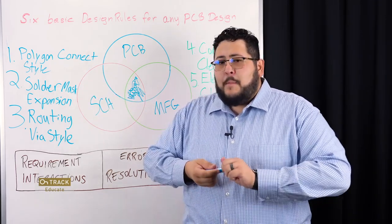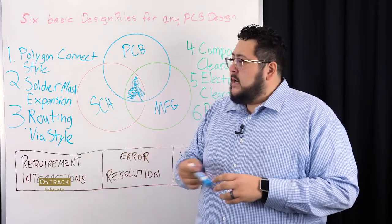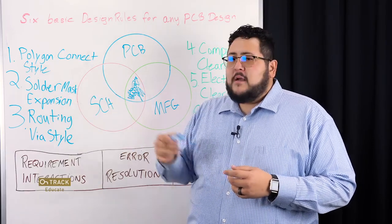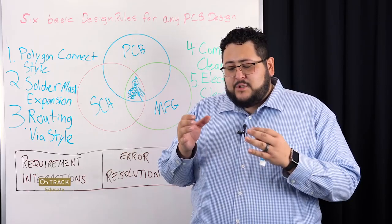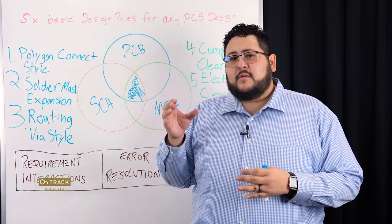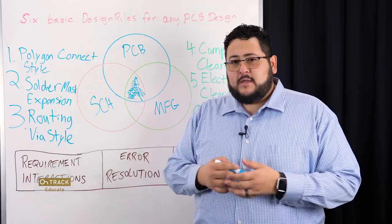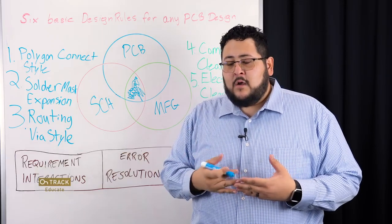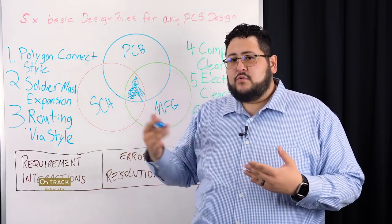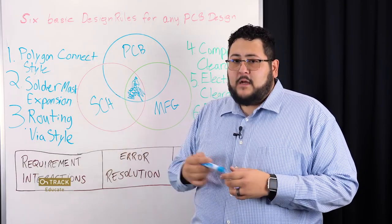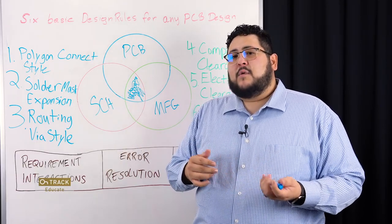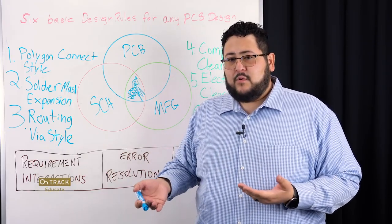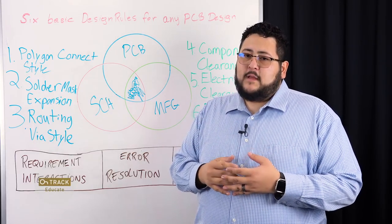Let's start with the Polygon Connect style. These rules are often overlooked by a lot of people. The Polygon Connect style helps you define how you connect from a via or pad over to the polygon itself. That ensures that you can have proper thermal connection and proper current connection to the copper and these polygons. If you don't have that information, it's quite possible that you miss a pad and don't connect it properly to a polygon.